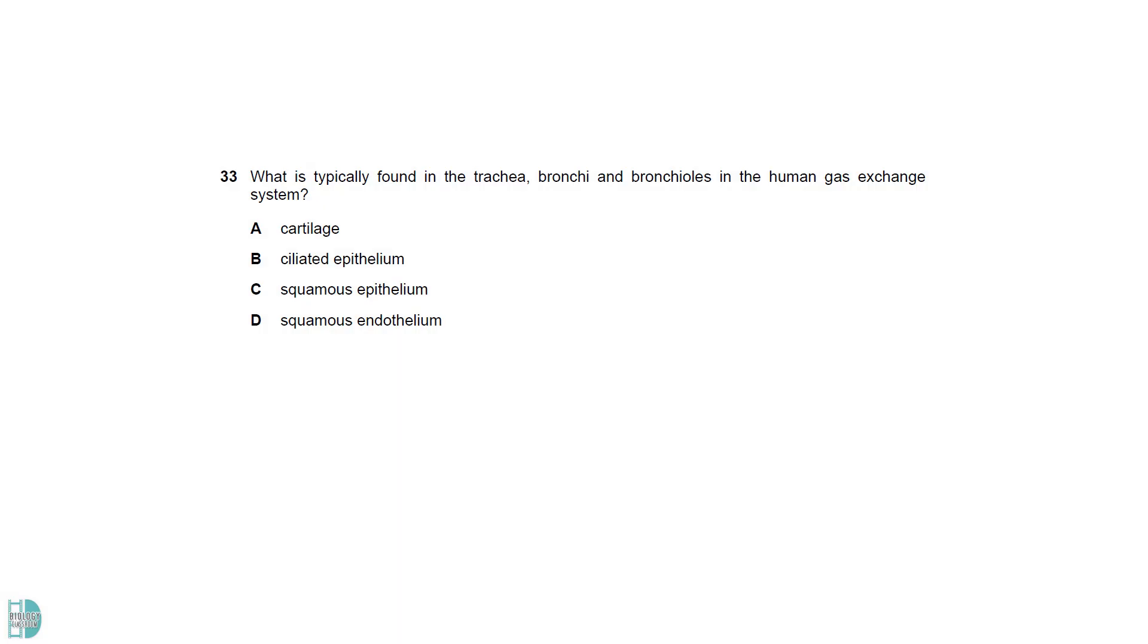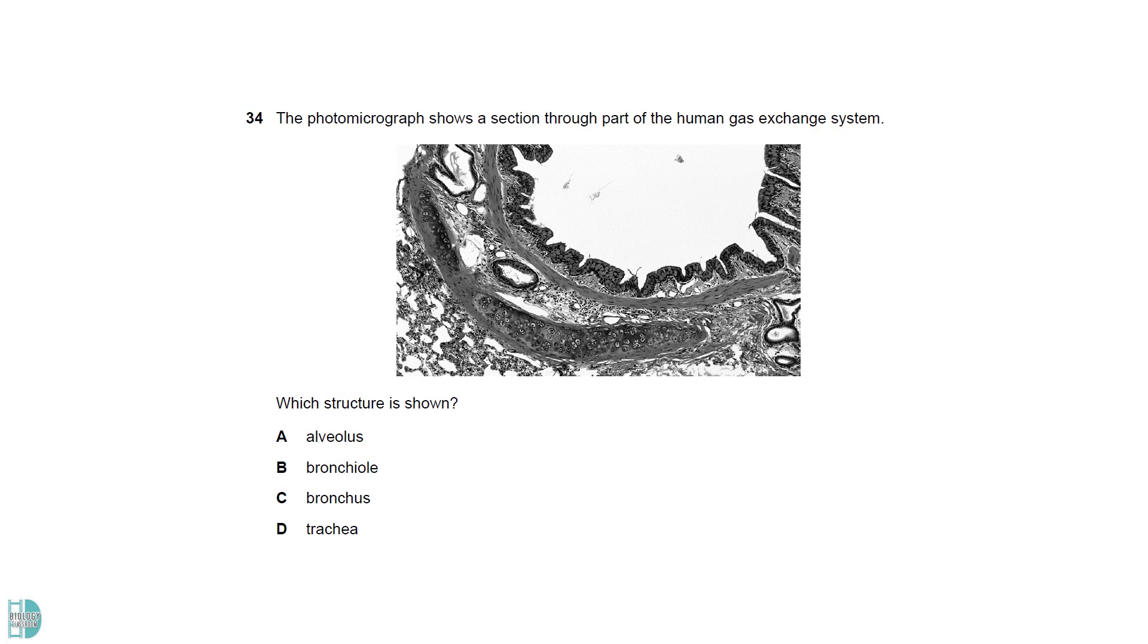All three of the structures contain ciliated epithelium, not squamous epithelium. Bronchioles do not have cartilage. The endothelium is found in blood vessels, not respiratory airways. Cartilage is present in the section, so it cannot be alveolus and bronchiole. The cartilage does not form a C-shaped ring, but just fragments. This is not a trachea, but a bronchus.